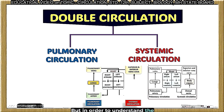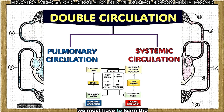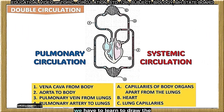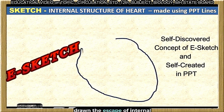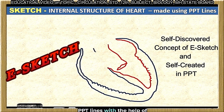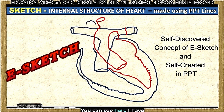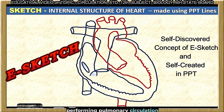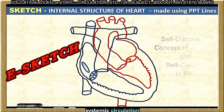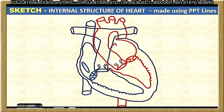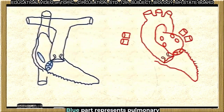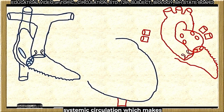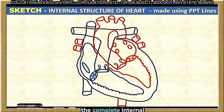In order to understand the physiology of circulation, we must learn the morphology and anatomy of the heart — we need to learn to draw the internal structure of the heart. Here you can see I have drawn an e-sketch of the internal structure of the heart using just PPT lines with the help of a computer mouse. I have highlighted the part of the heart performing pulmonary circulation in blue color and the part of systemic circulation in red color. The blue part represents pulmonary and the red color represents systemic circulation, which together make the complete internal structure of the heart.